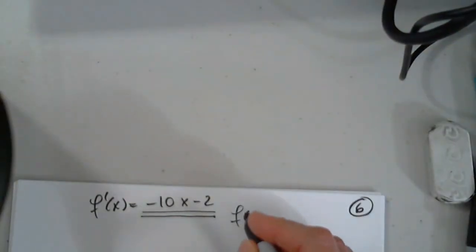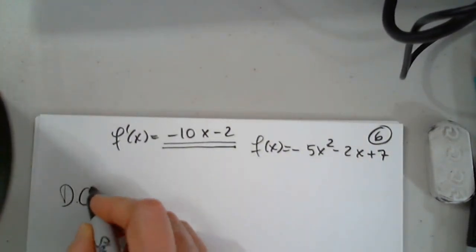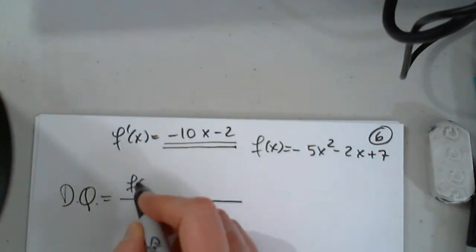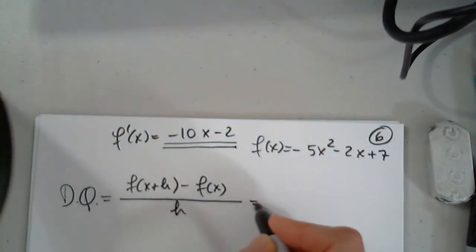Then the next step, I'm going to copy it here. Negative 5x squared minus 2x plus 7. The next step, I will find a difference quotient. And I know the difference quotient is f of x plus h minus f of x divided by h. Perfect.